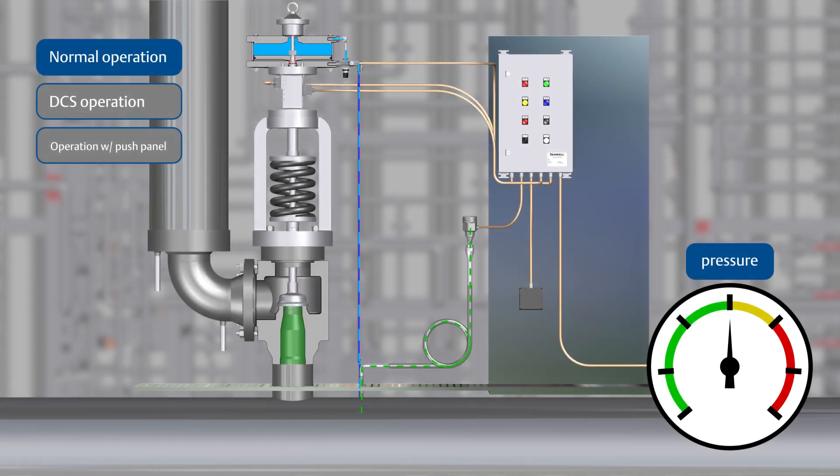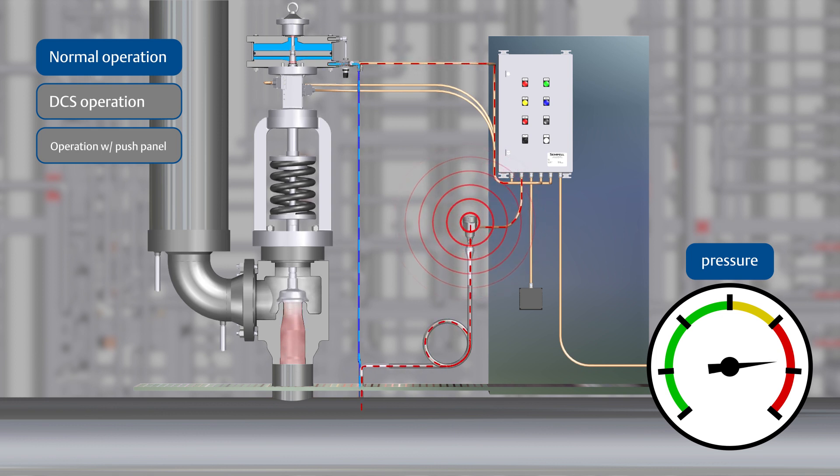The control unit acts independently in the event that the pressure switch detects a pressure higher than the set pressure, and switches the solenoid valve directly connected to the actuator of the valve. Loading air is relieved and lifting air is built up to safely open the valve.